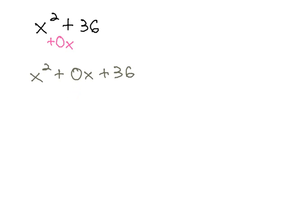And if we were to factor this using the AC method, we would want to multiply to 36 and add to 0. However, if we look at the ways of multiplying to 36,